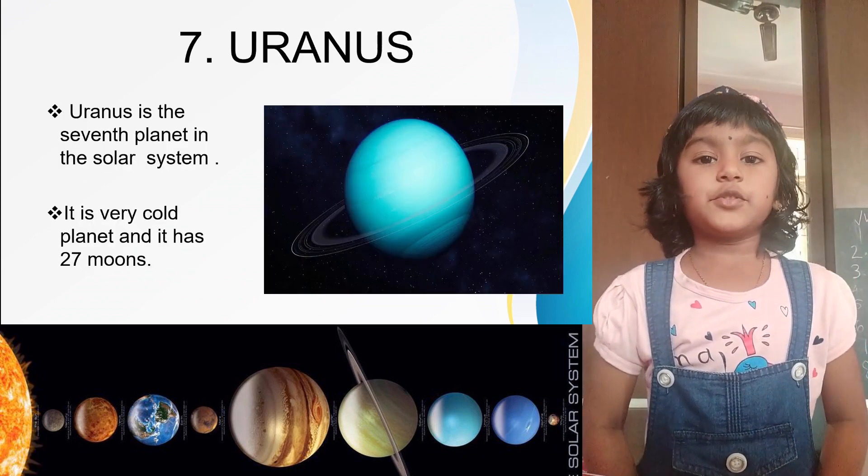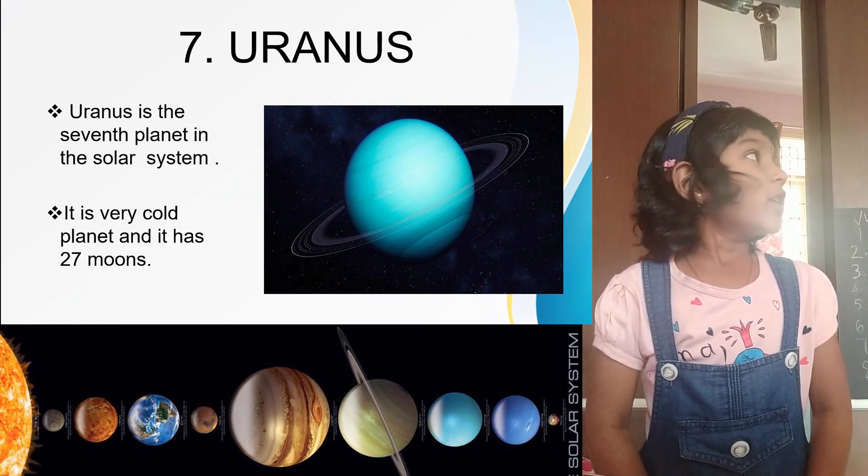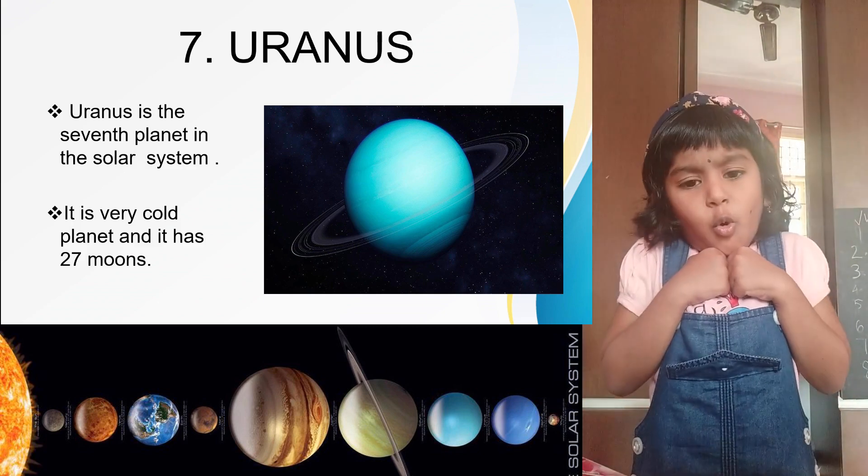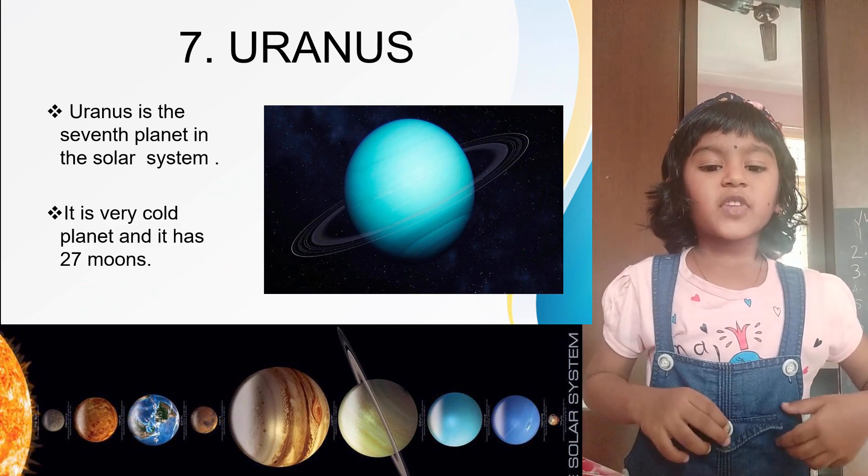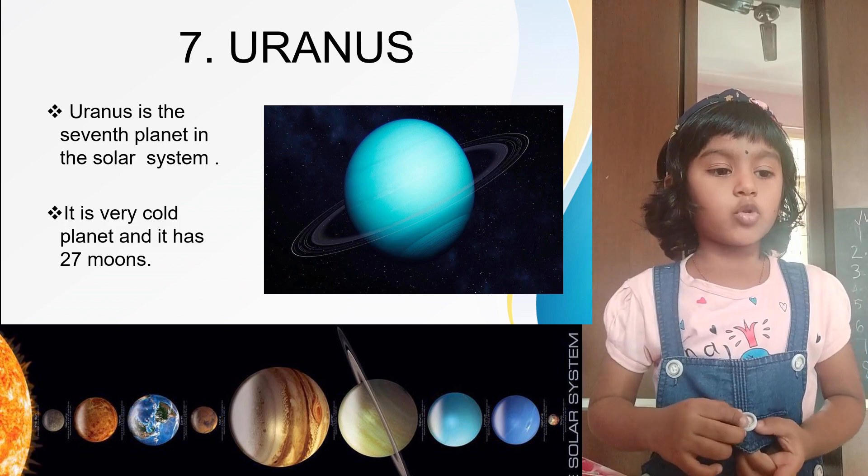Uranus. Uranus is the seventh planet of the solar system. It is a cold planet and has 27 moons.